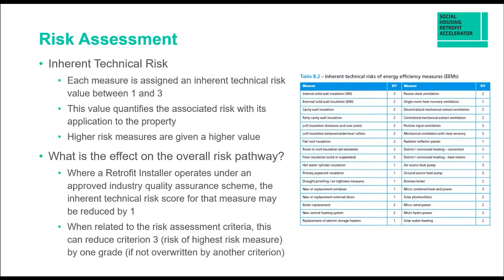These IHT values can affect the overall risk pathway. Where a retrofit installer operates under an approved industry quality assurance scheme, the IHT score for that measure may be reduced by one. For example, EWI is quantified as an IHT of two, but if the installer is approved under an industry quality assurance scheme operating under PAS2035, that IHT value can be reduced to one. This could reduce your overall risk pathway — for example, from a B down to an A — which has a knock-on effect on the project you're running.